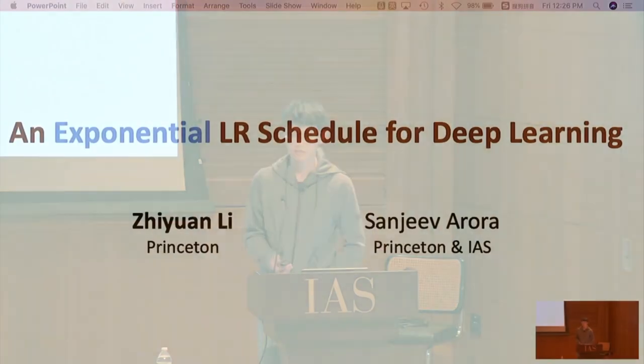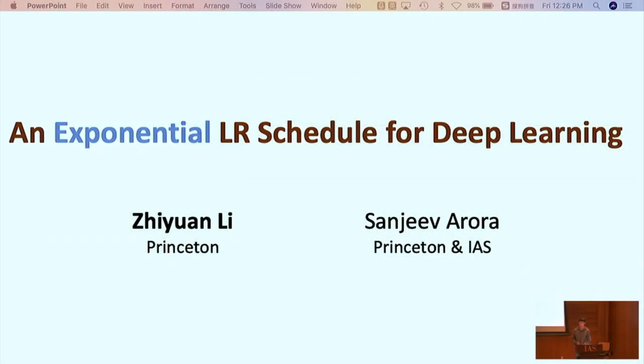There already exist lots of exotic learning rate schedules in deep learning such as cosine, triangular and cyclical learning rates. Our exponential growing learning rate schedule is an extreme example which becomes possible with the presence of batch normalization. The goal is to better understand the complex interplay happening in practice between the modern architecture and tricks such as BN, weight decay and LR decay.